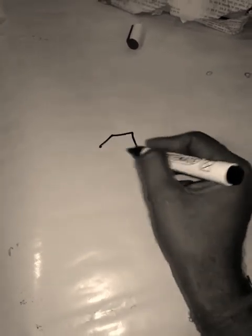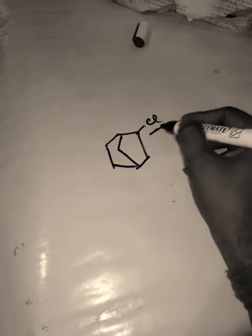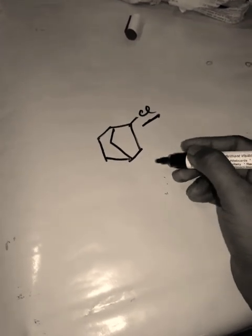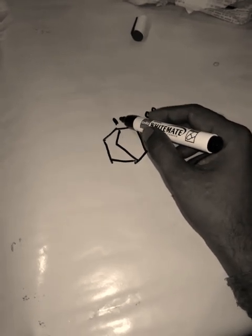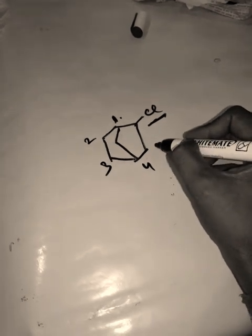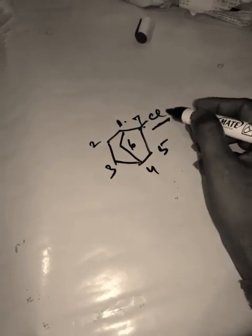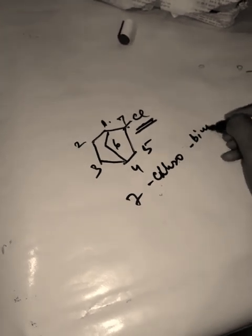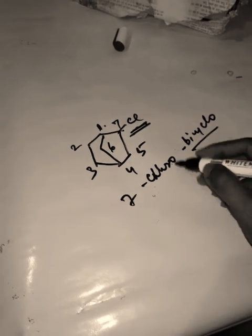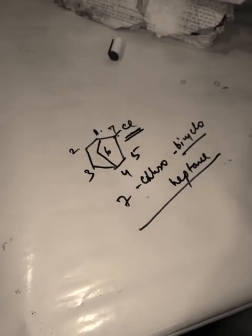Now with a substituent added to the bicyclic system: first number the carbons starting from one bridgehead, going through the longest bridge: one, two, three, four, five, six, seven. A chloro group is at position seven. So the prefix is '7-chloro'. The system is bicyclic with seven carbons: bicyclo[2.2.1]heptane. Full name: 7-chlorobicyclo[2.2.1]heptane.